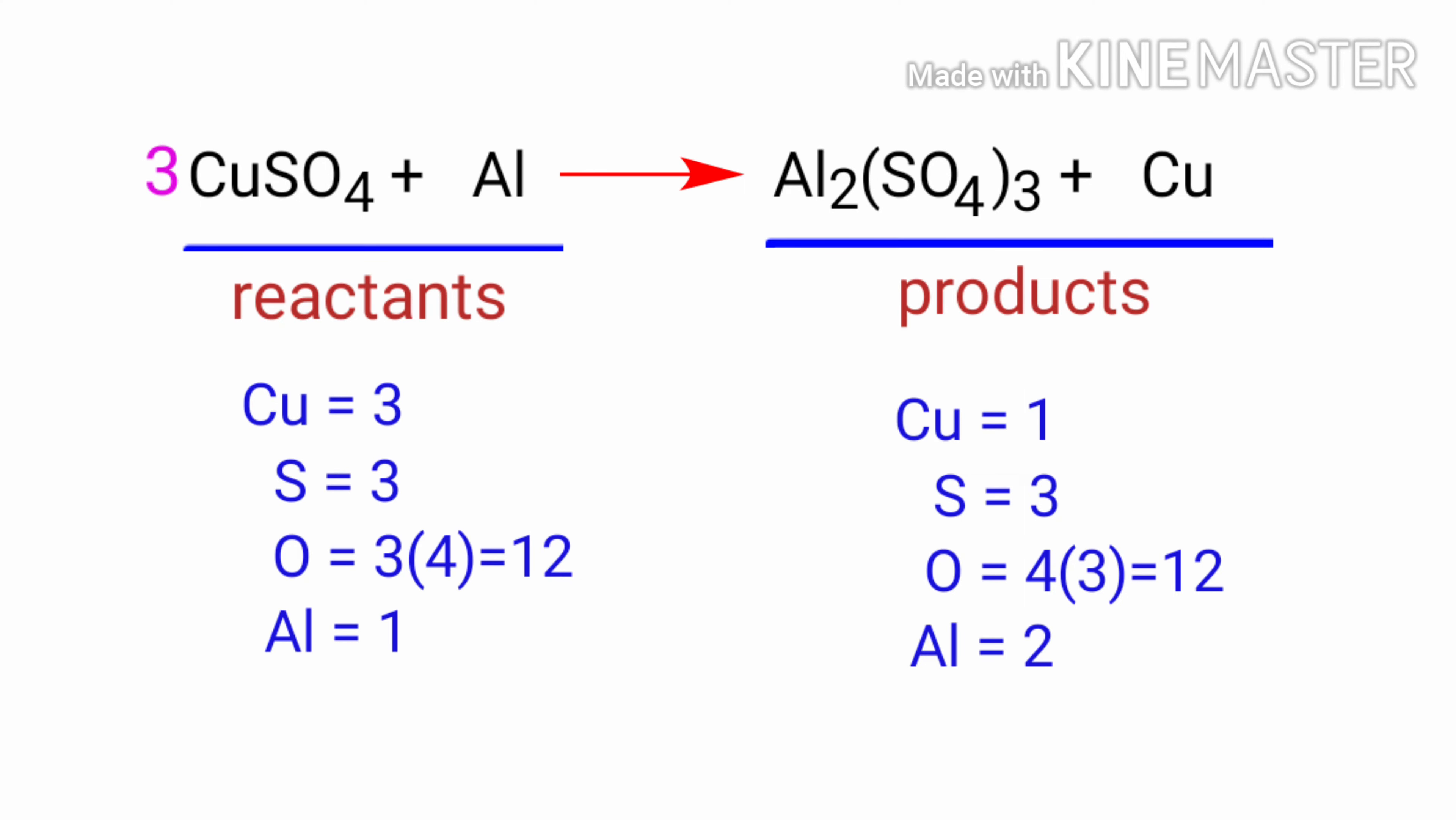The sulfur atoms are balanced. Now we need to balance the copper and aluminium atoms. To do this, we need to put a coefficient of 3 in front of Cu, and we need to put a coefficient of 2 in front of Al.